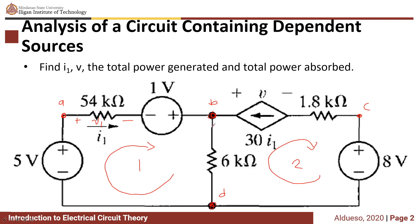Next, we need to assign a current going downwards — we can label this as I2. Then a voltage here, label this as V2. And then for the resistor here, conforming with the passive sign convention, the current flowing here is equivalent to the current in this dependent current source, flowing in this direction. So we assume the polarity of the voltage V positive on the right side and negative on the left side — we can label this as V3.